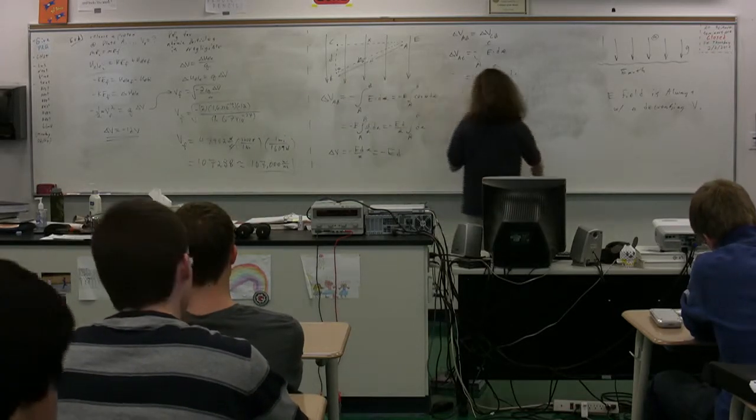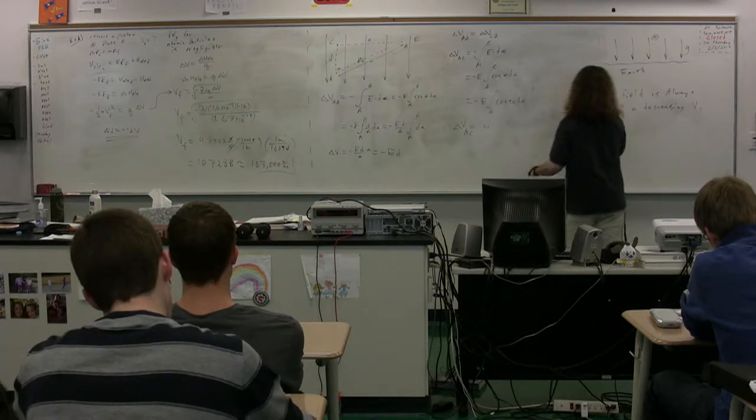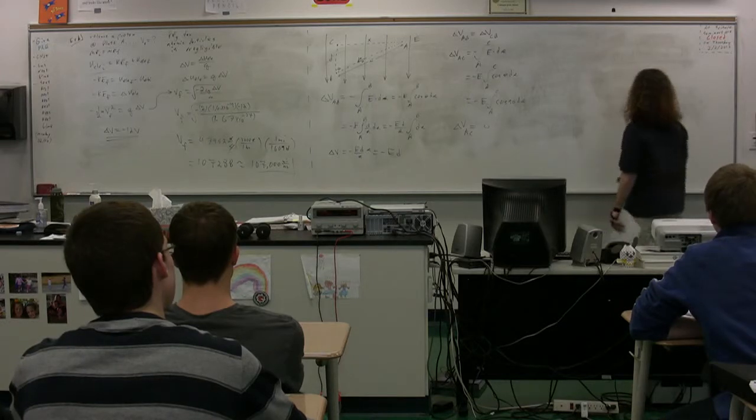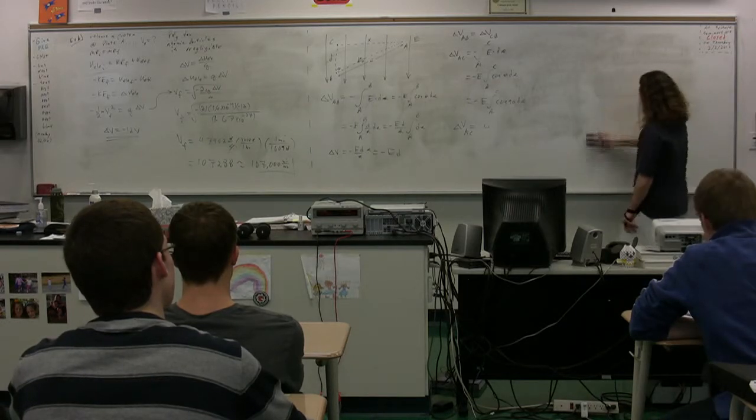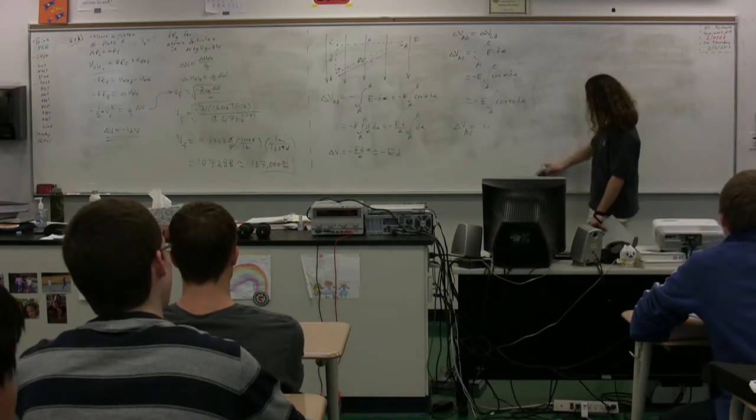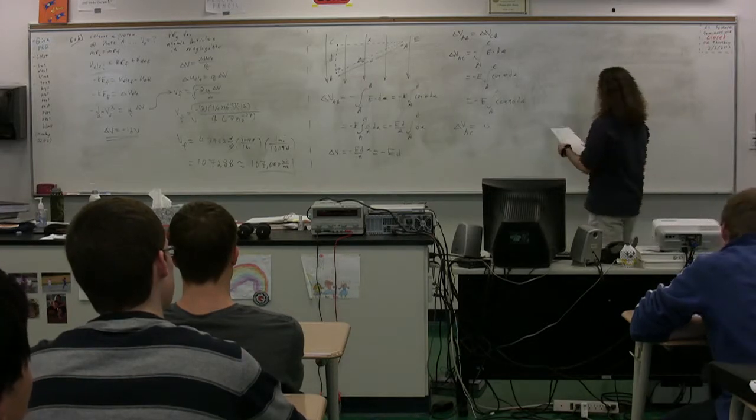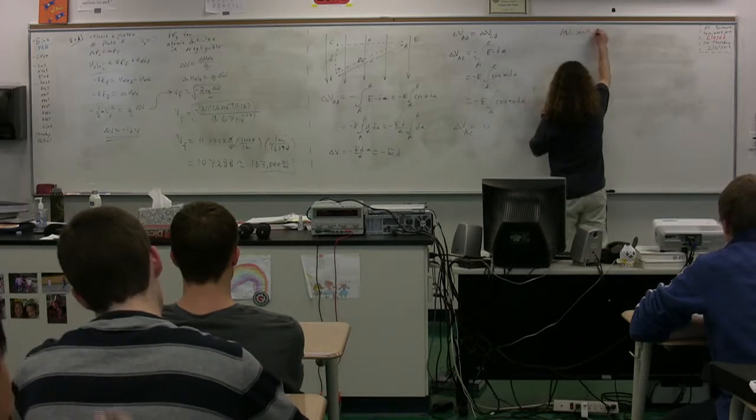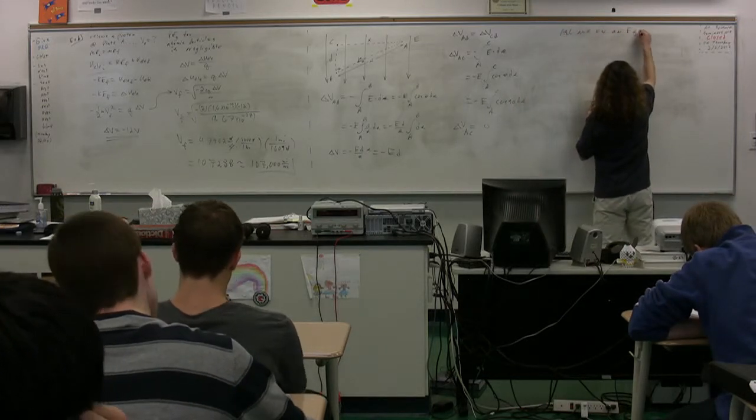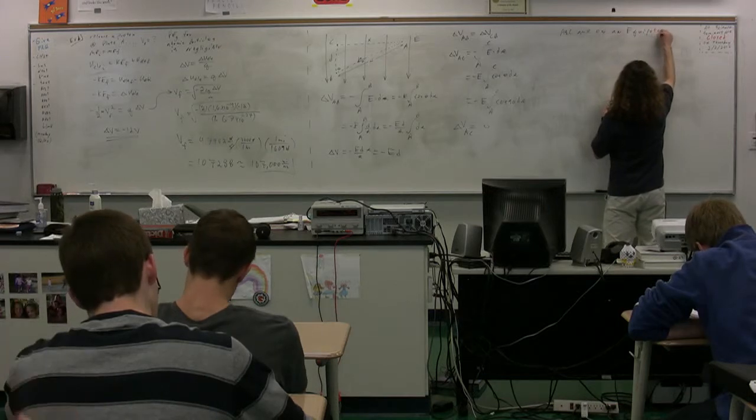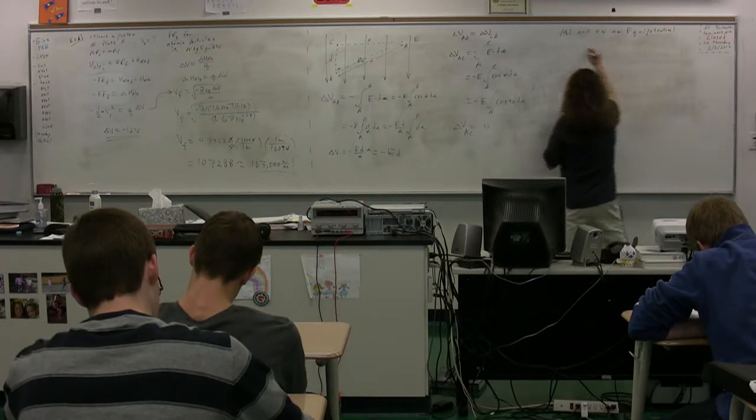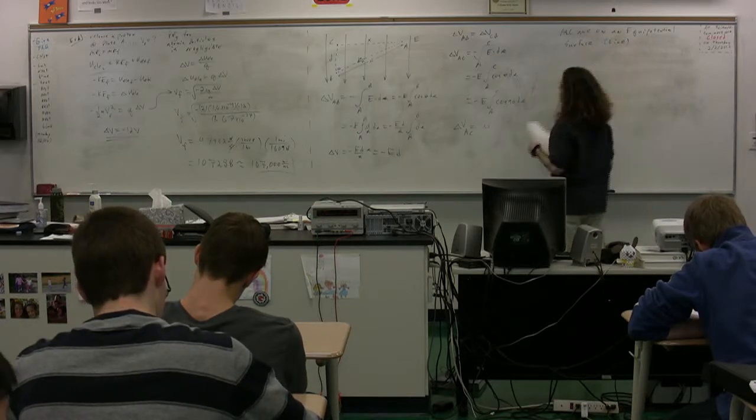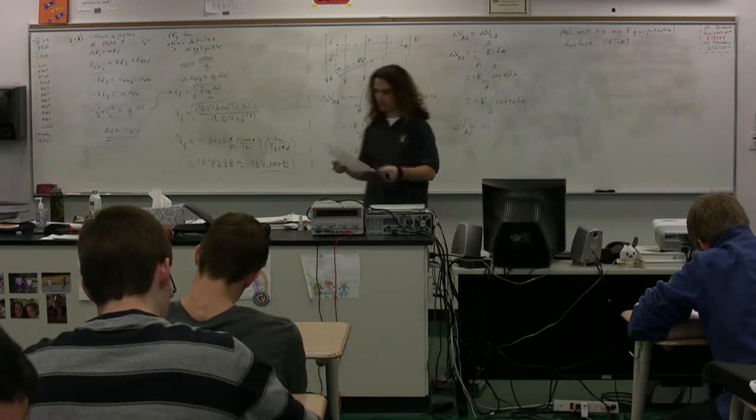A and C are at something called an equipotential surface, or an equipotential line in this particular case. A and C are on an equipotential surface, or if you prefer, a line, if you're talking about a single as opposed to a two-dimensional object.